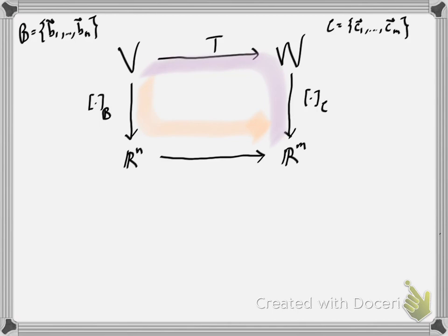I want to complete this diagram so that going across with T and then down with the coordinate mapping for C gives the same thing as going down using the coordinate mapping for B and then across. This map across is going to be a linear transformation from Rn to Rm, and those can be described by multiplication by an M by N matrix.